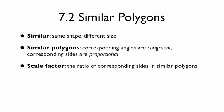Section 7.2 is all about similar polygons. When we talk mathematically, similar means same shape and different size. Similar polygons have corresponding angles that are congruent and corresponding sides that are proportional. Two similar polygons have a scale factor, which is the ratio of the corresponding sides in similar polygons.